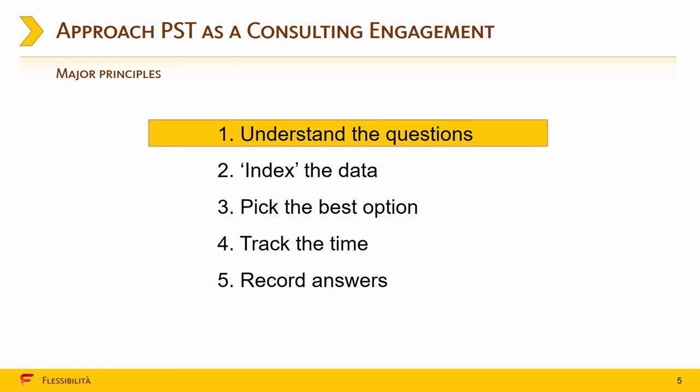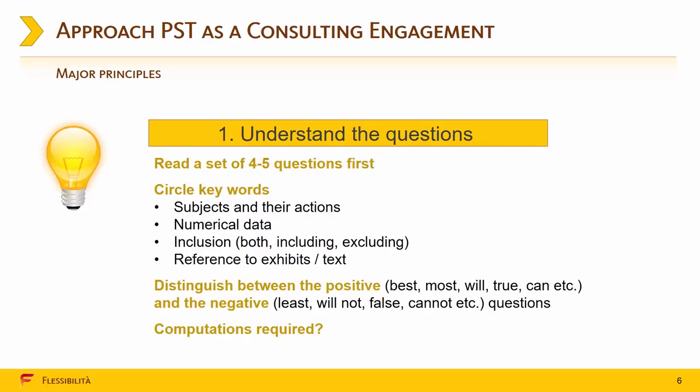Step number 1: Understand the questions. We need to read a set of 4 to 5 questions first and then figure out what's going on in those questions. We need to circle keywords like subjects and actions, data, inclusion-exclusion comments, reference to exhibits and text. We also need to figure out whether the question asks a positive piece of information or the negative piece of information which is least, will not, false, cannot, etc. Also notice if the questions require computations or not. This is important because computations are usually more time consuming.